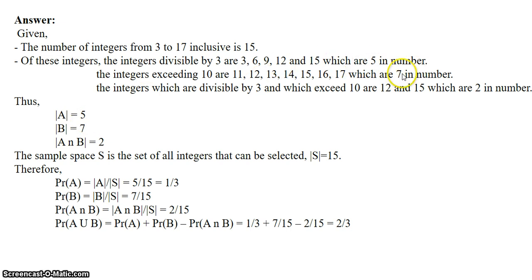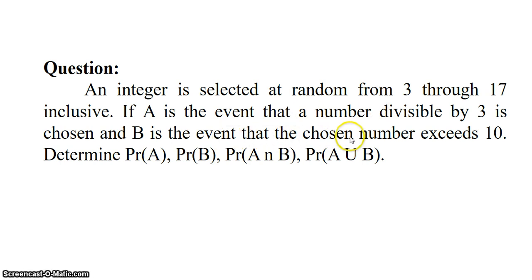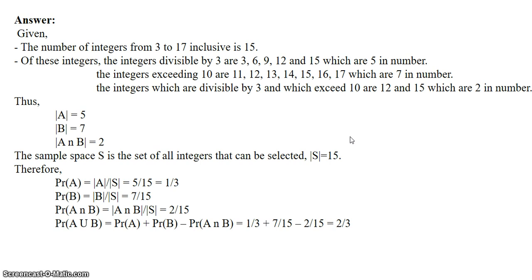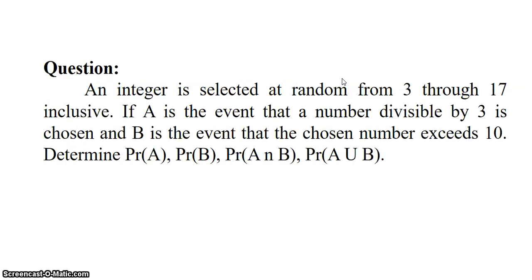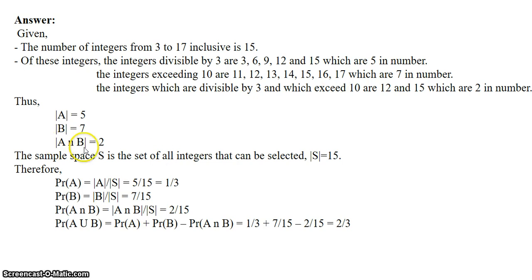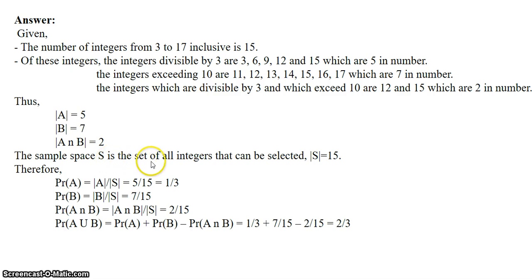There are 5 numbers which are divisible by 3. Event B is that the chosen number exceeds 10, so the count of event B is 7. Next, A intersection B is the event where the integer is divisible by 3 and also exceeds 10. There are only two numbers — 12 and 15 — which satisfy both conditions, so A intersection B count is 2. The sample space S is the set of all integers from 3 to 17, therefore sample space S is equal to 15.